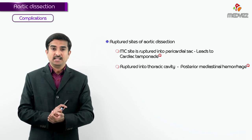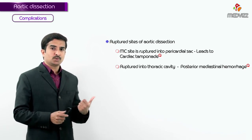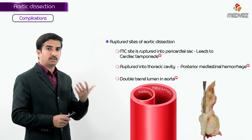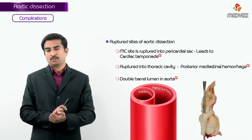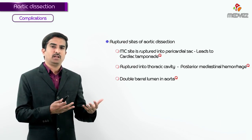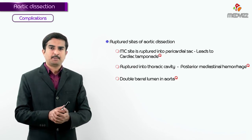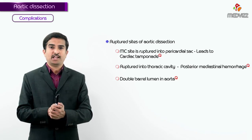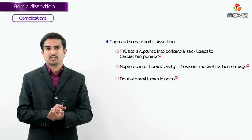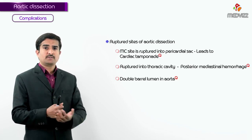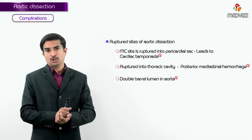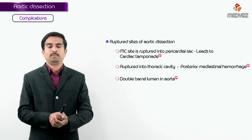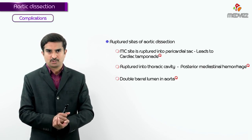Blood tracking back into the lumen can create a double-barrel channel in the aorta, though this is a rare complication. In summary, key complications are: rupture into the pericardium causing tamponade, rupture into the thoracic aorta causing massive mediastinal hemorrhage, and formation of a double-barrel lumen in the aorta.